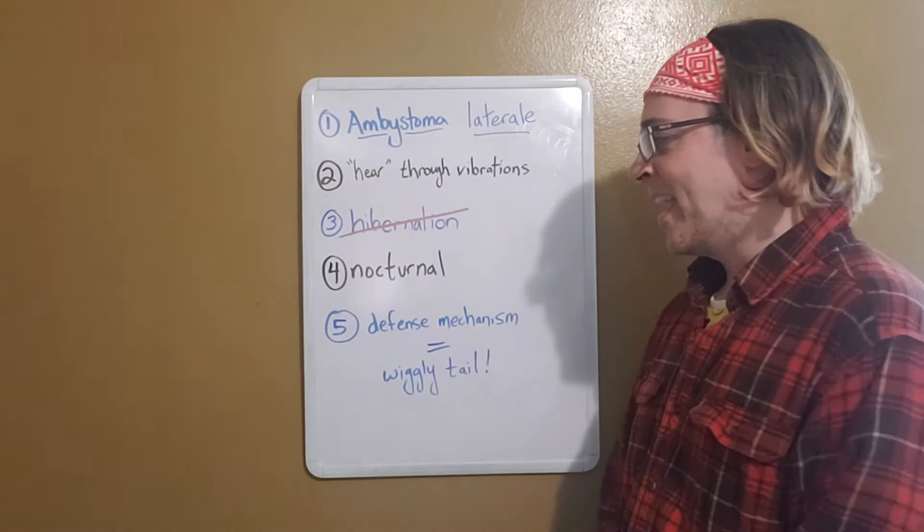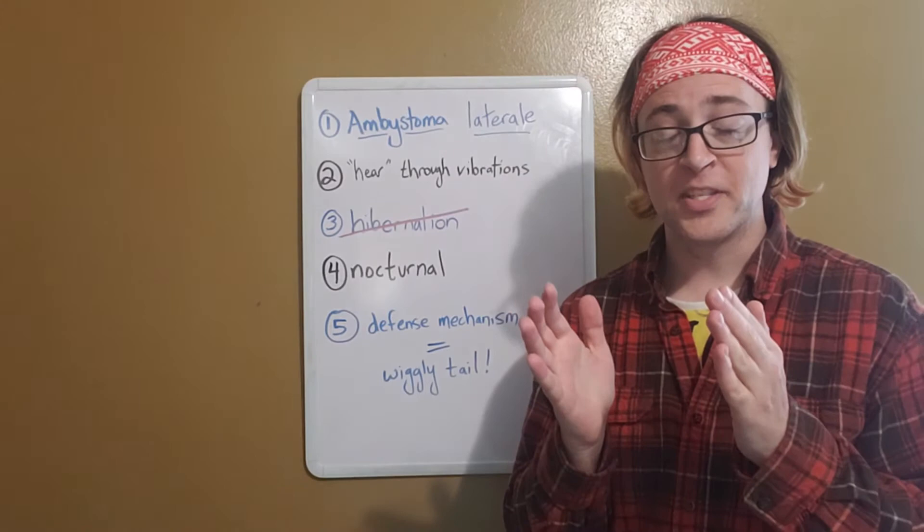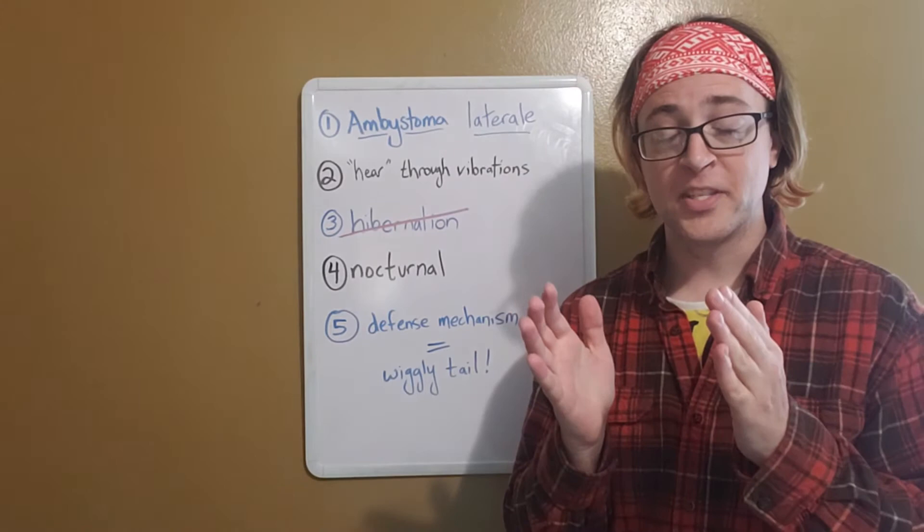And fact number five. They have a really cool defense mechanism to deal with predators. So if they're not able to escape a predator, it's on them. What they're going to do is they're going to hold totally still, except for their tail. And they're going to wiggle their tail a lot.